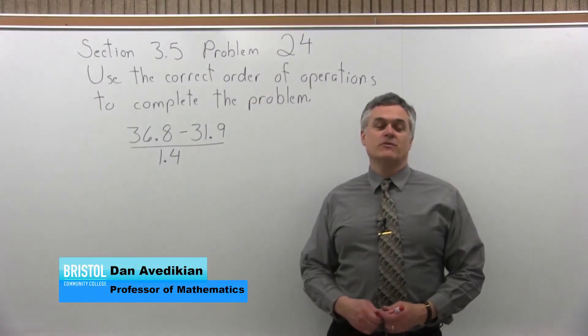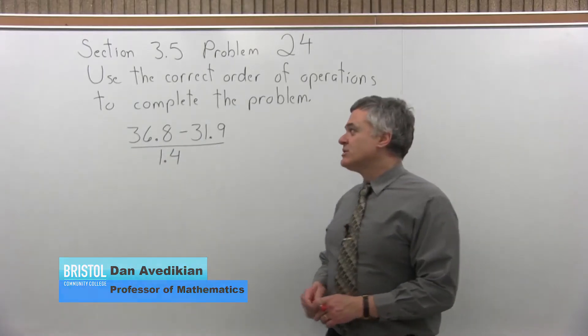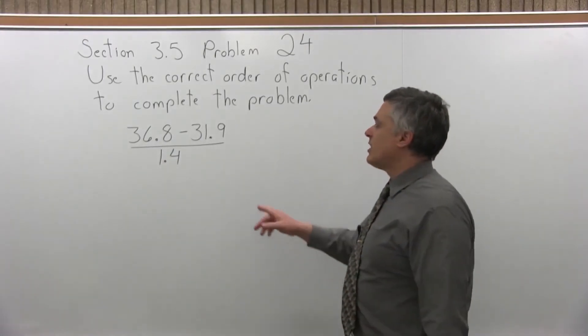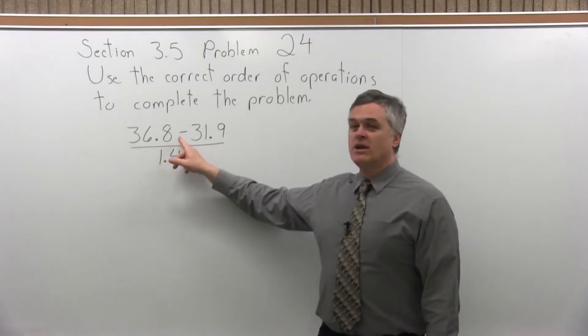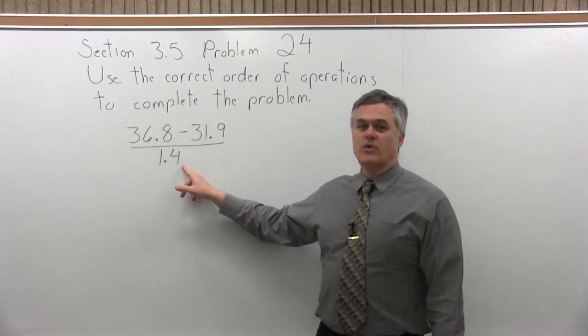This is Section 3.5, Problem number 24. It says use the correct order of operations to complete the problem and we have 36.8 minus 31.9 over 1.4.